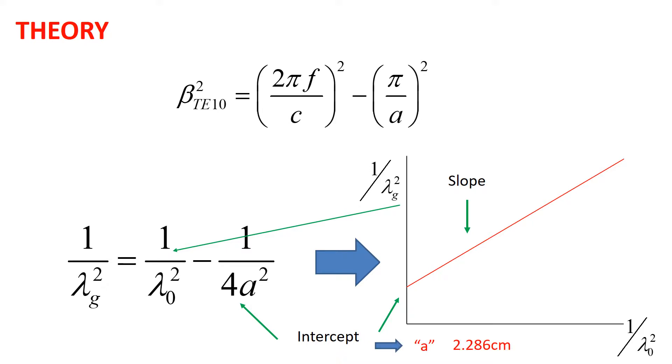So, we can calculate the value of a that must be around 2.28 cm as it corresponds to the WR90 waveguide.